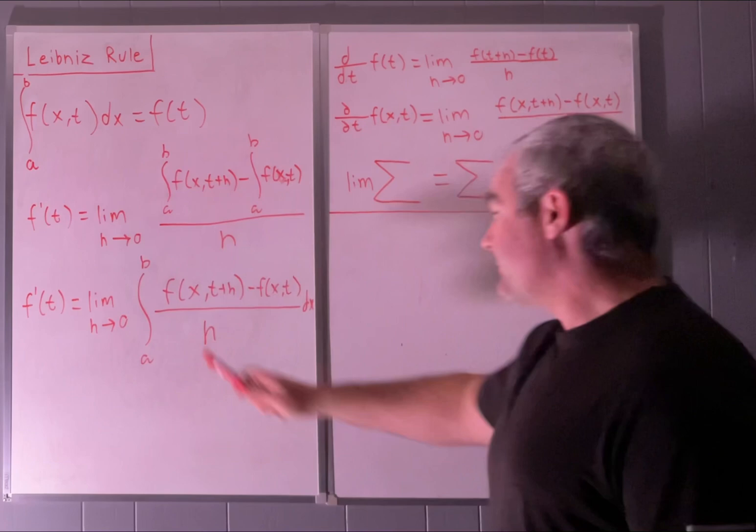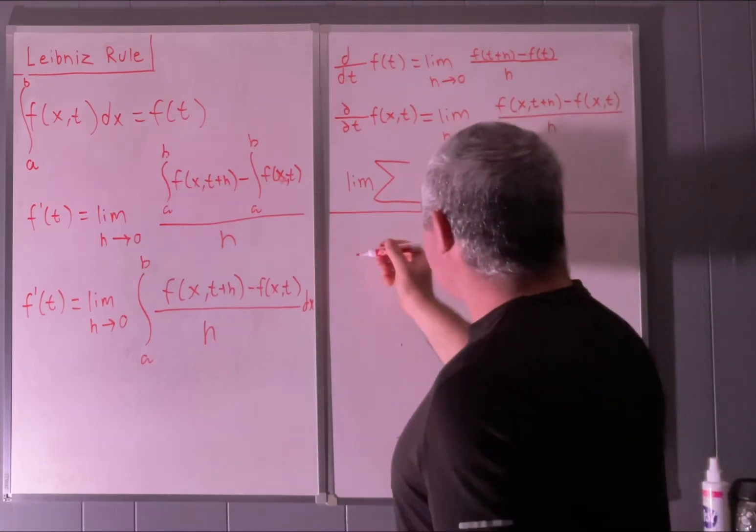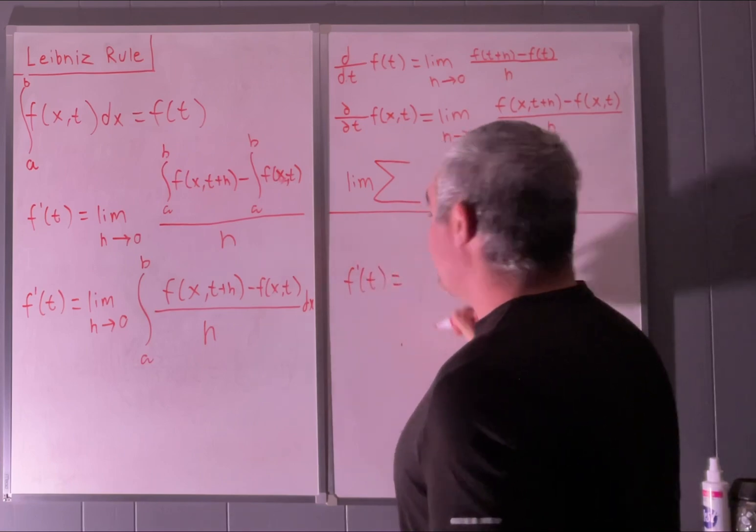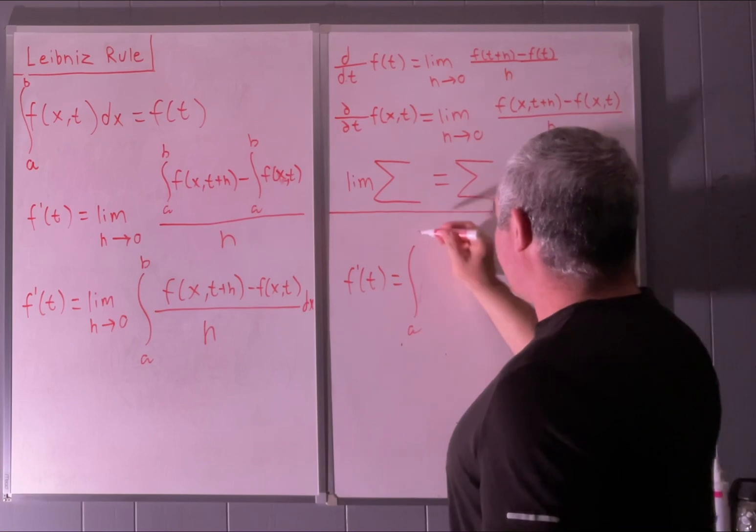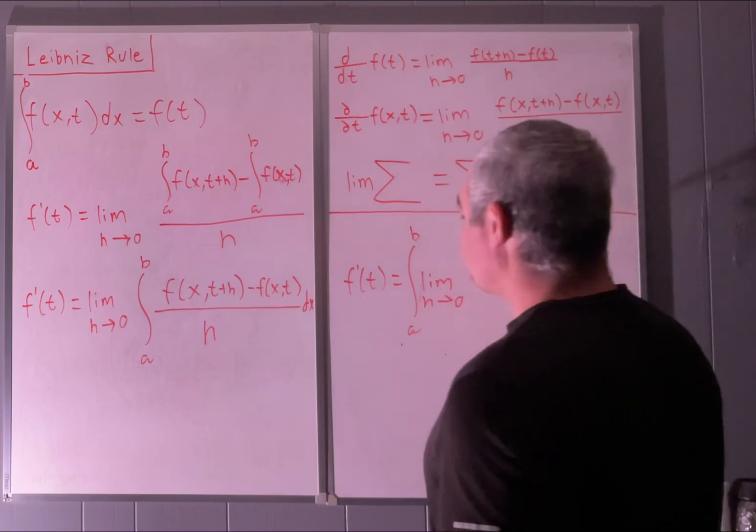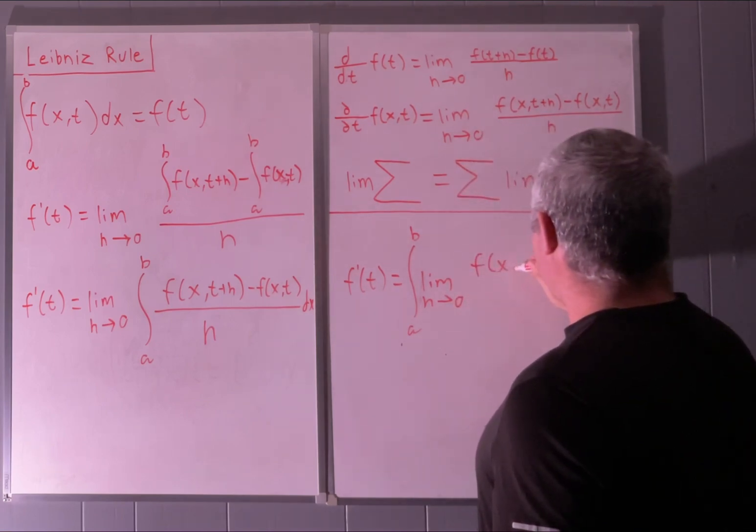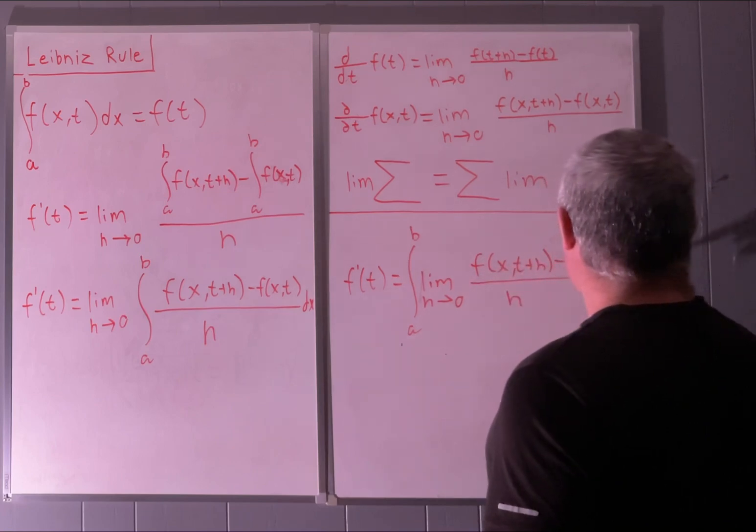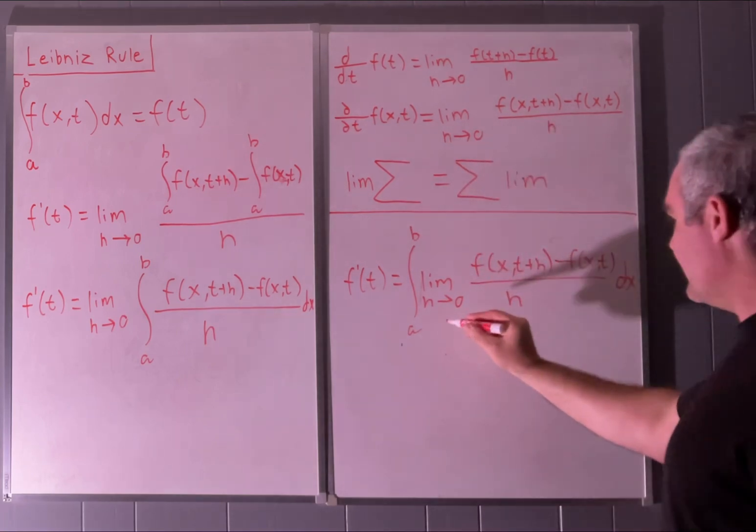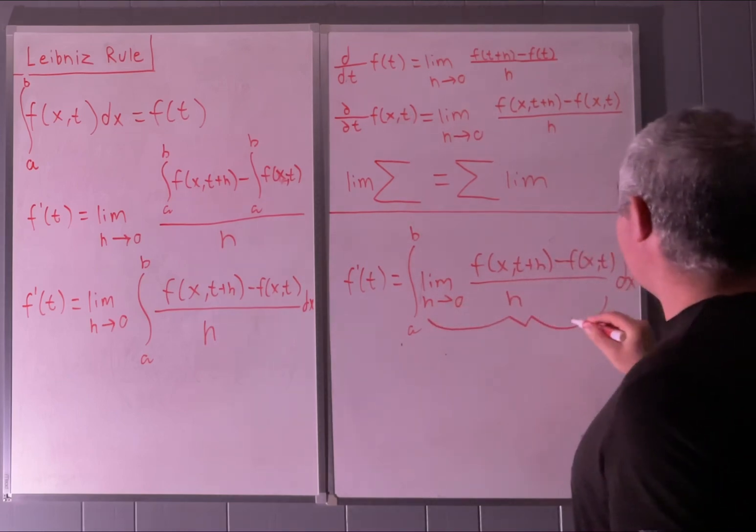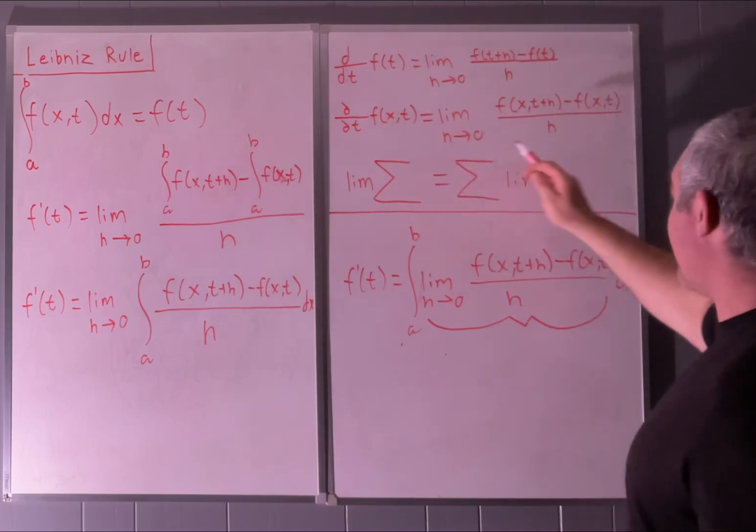So all we've got to do is push that limit right inside the integral side. Our f prime of t is equal to the integral from a to b of the limit as h approaches 0 of f of x and t plus h minus f of x of t all over h dx. And this, right here, that is the limit definition of a partial derivative.